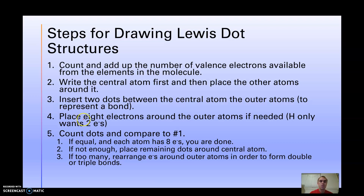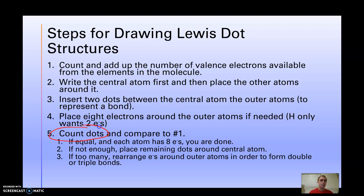Step three: put two dots between the central atom and all of the other atoms — that's your chemical bond. Step four: place eight electrons — the octet number — around the outer atoms if needed. Remember that hydrogen only wants two because it's small and doesn't go up to eight. Everything else needs eight.